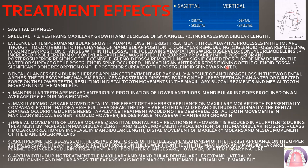The third process is condylar position changes within the fossa. There is significant bone resorption on the posterior surface of the post-glenoid spine, and there is reposition of bone on the glenoid fossa — resorption on the posterior surface and reposition on the anterior surface of the post-glenoid spine.